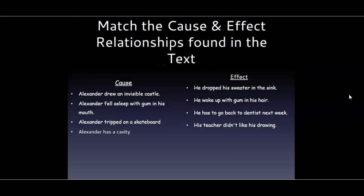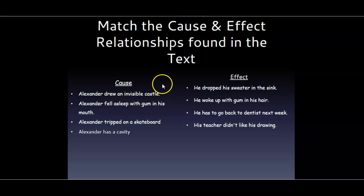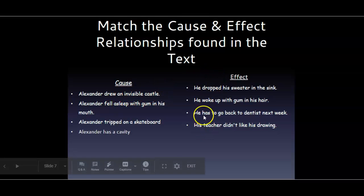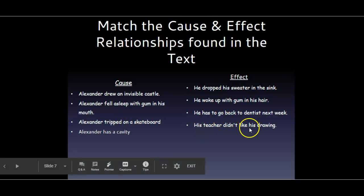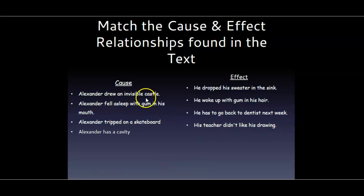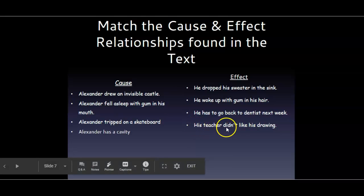Let's look at the cause and effect relationships that can be found in the text that we just read. So because Alexander drew an invisible castle, which of these things is true? He dropped his sweater in the sink? He woke up with gum in his hair? He asked to go back to the dentist next week? Or his teacher didn't like his drawing? Well, he drew an invisible castle — that means there was nothing on the paper, it was invisible. So obviously his teacher didn't like his drawing. That was the effect.